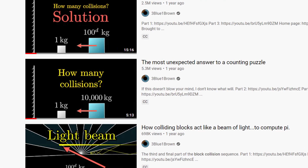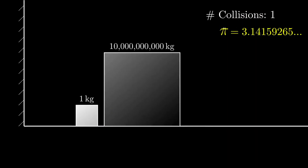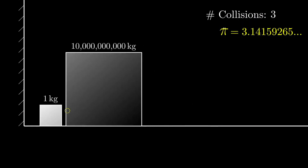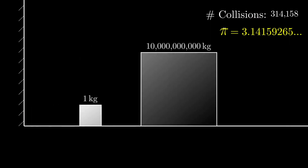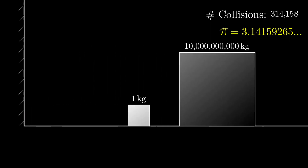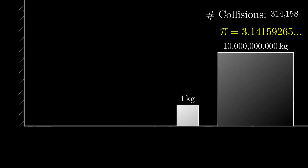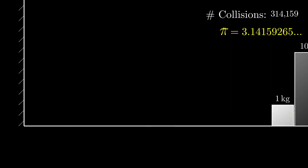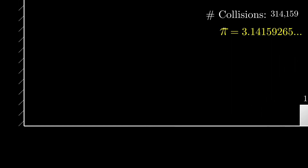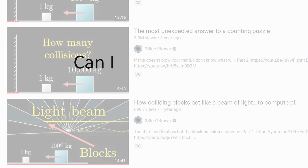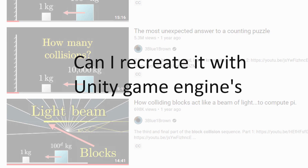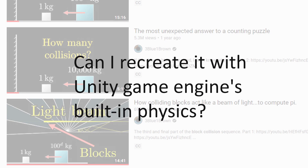In one of his videos, 3Blue1Brown showed an interest in creating a pi by counting the number of times small blocks collide when a bigger block is launched towards it. To simulate the situation, he used very specific formulas, which he explained in his third video. But I wondered, is it possible to recreate the similar effect just by using Unity game engine's built-in physics?